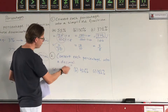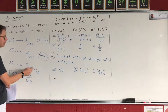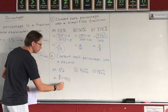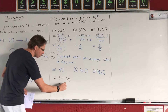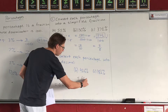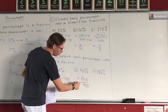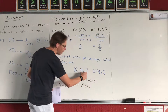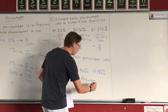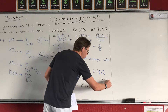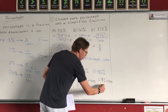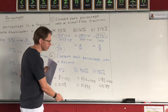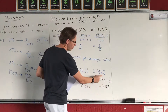Question two: convert each percentage into a decimal. Remember, over 100 means divide by 100. So 8% divided by 100 equals 0.08. For 43.6%, it's a percentage we convert to decimal by dividing by 100, giving 0.436. For 18 and a half percent, that's 18.5 divided by 100, which equals 0.185.